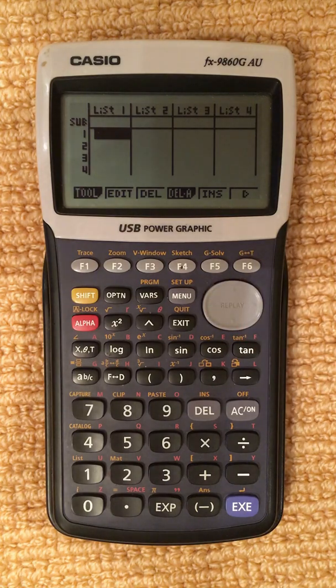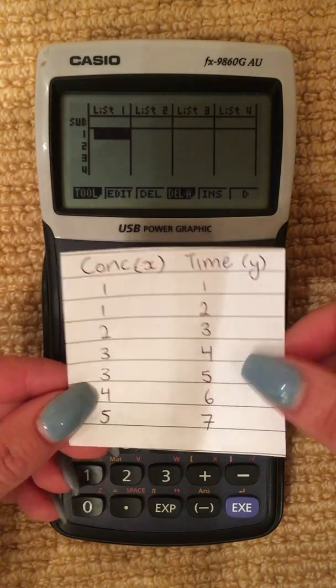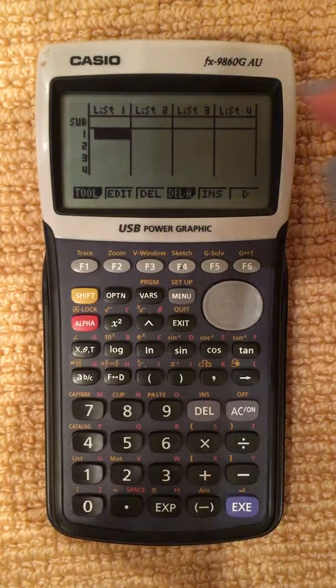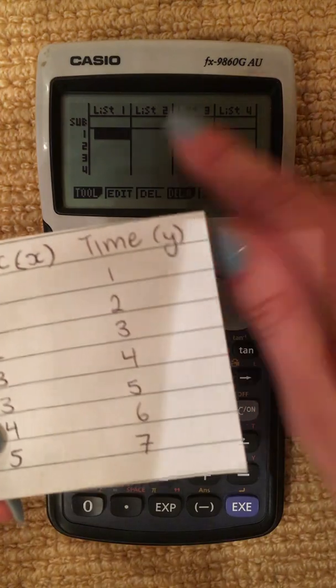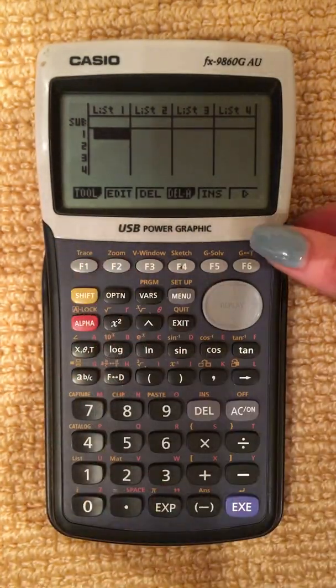Now before we plot in our points, we have our X and our Y. We'll put them in the list, but sometimes we don't know which list corresponds to the X and the Y. So to check this,